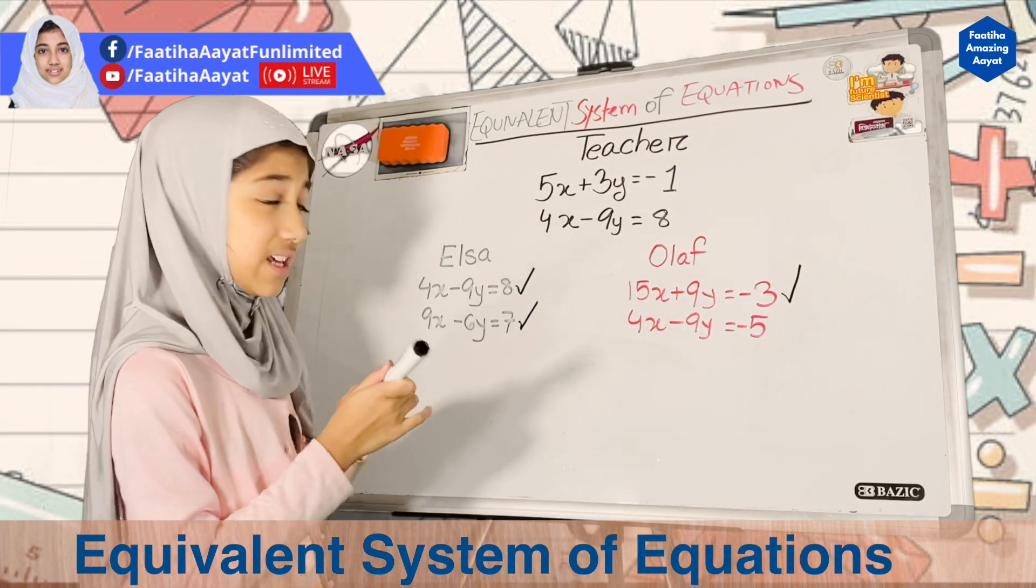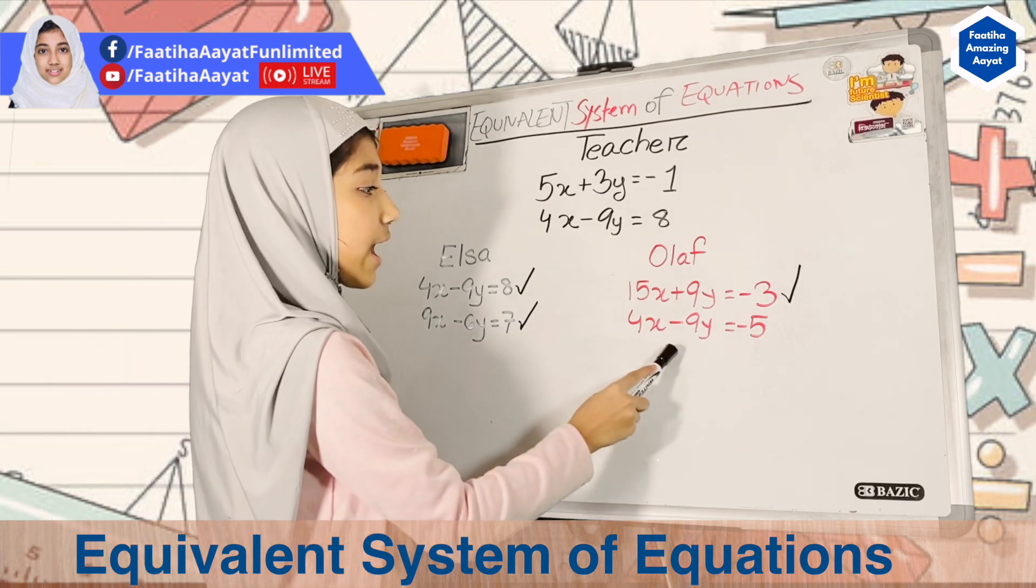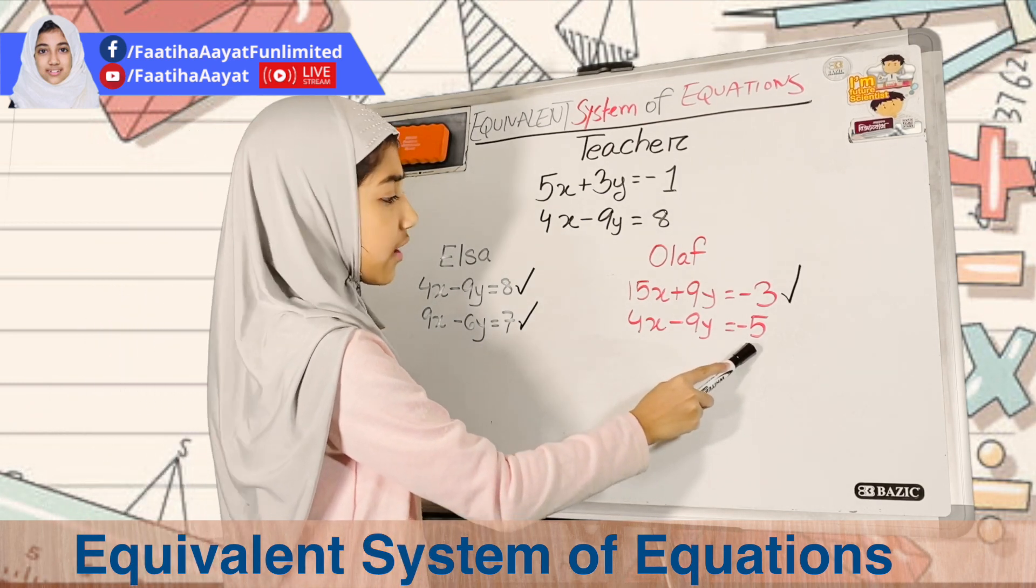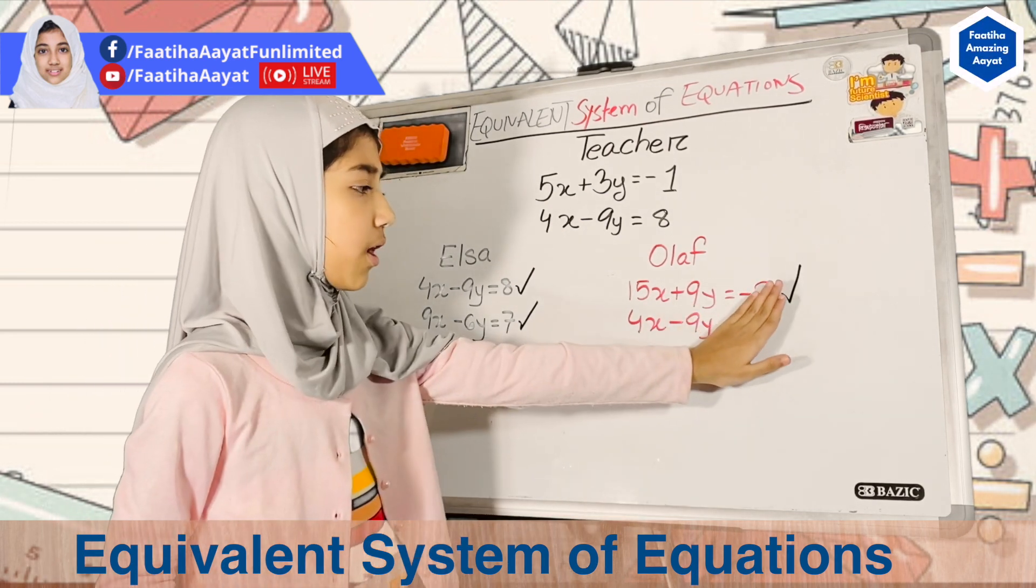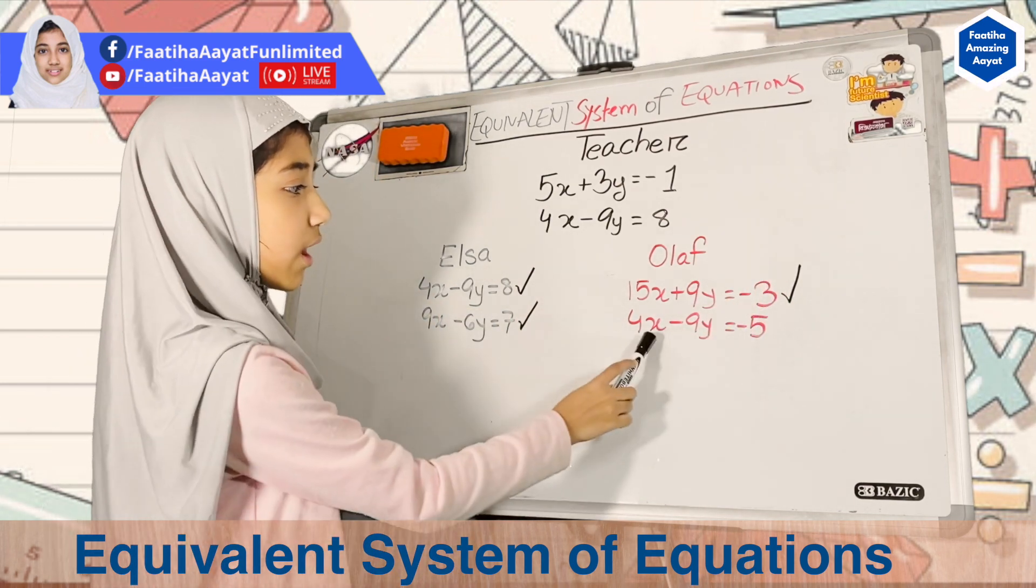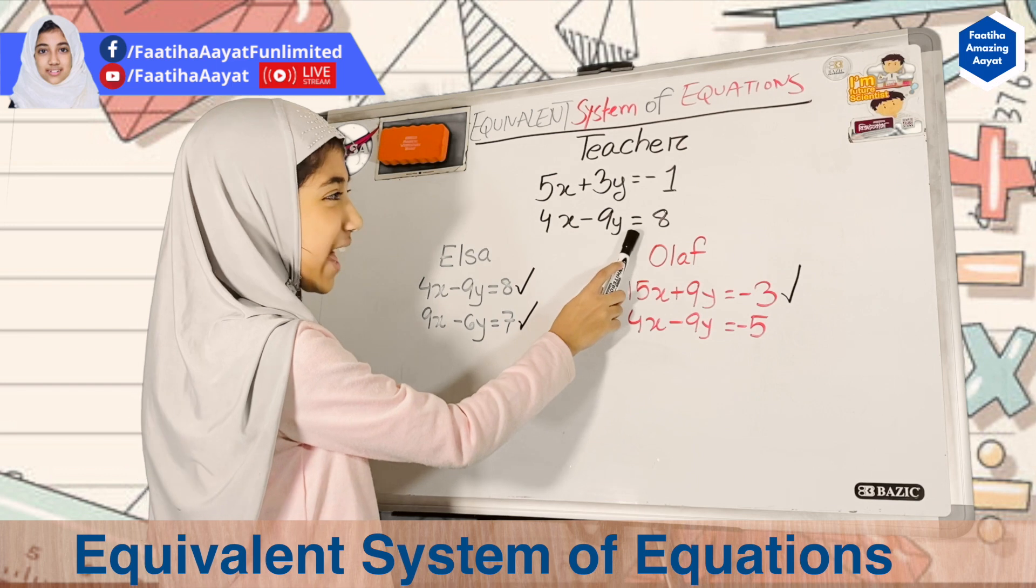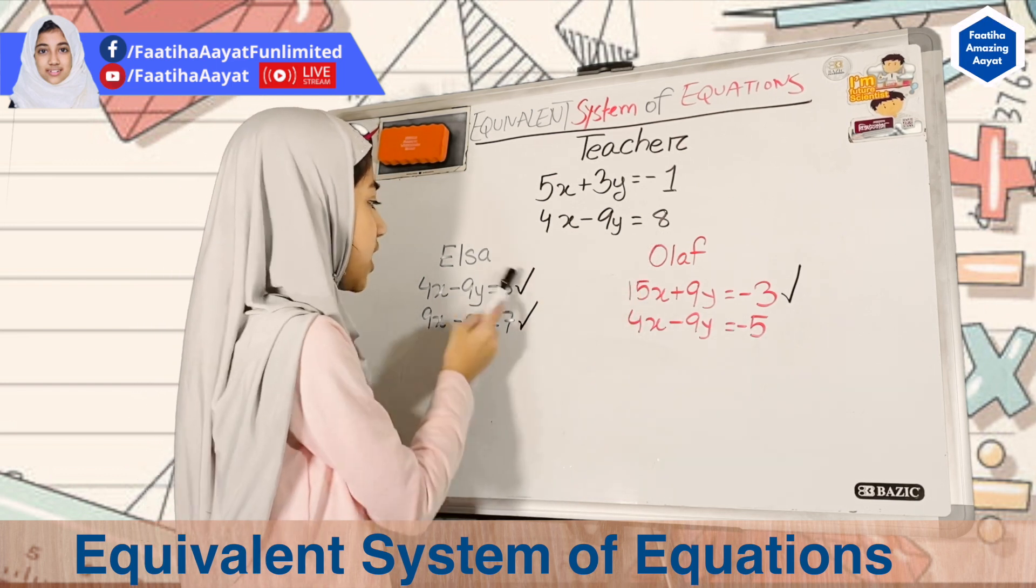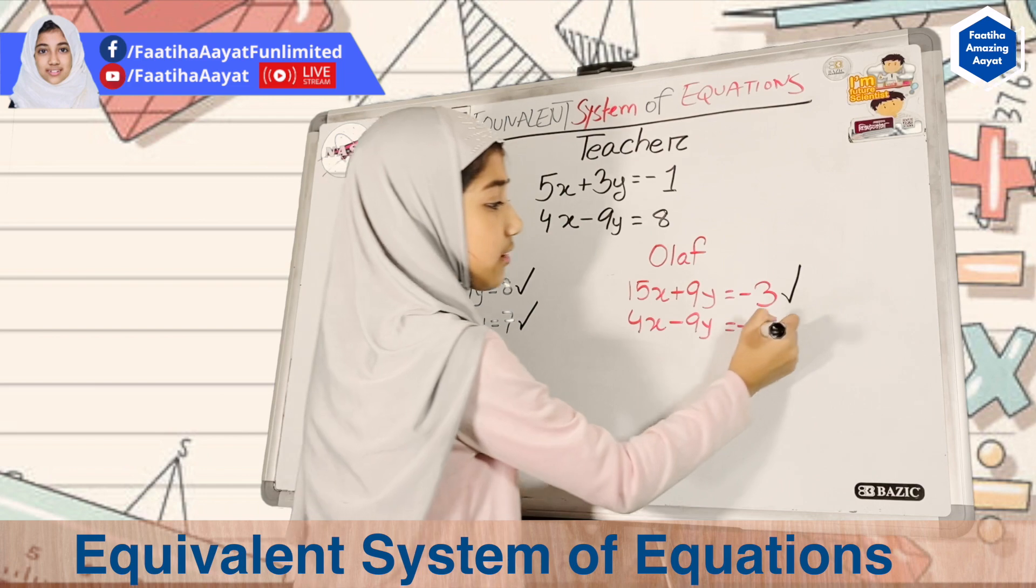Let's check for the last equation that he got. 4x minus 9y equals minus 5. Until this part, the parts for the left side, he was correct: 4x minus 9y, yes, but that equals 8, not minus 5. Even Elsa got that correct, but he did not get that correct.